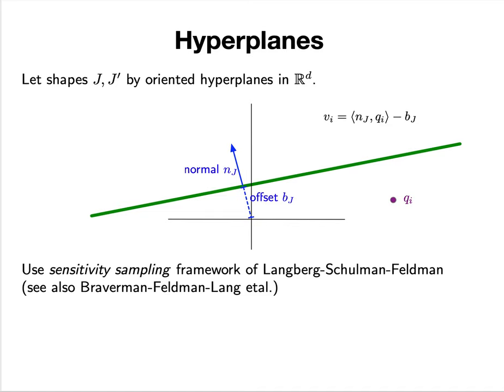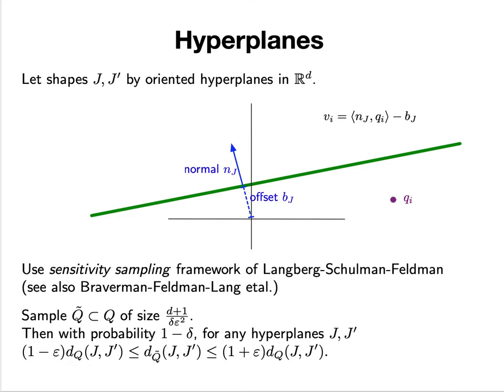This fits really well with the sensitivity sampling framework of Langberg, Schulman, and Feldman. This allows us to use powerful techniques to figure out how to subsample any points at Q. I can subsample Q to Q-tilde with (d+1)/δε² points.